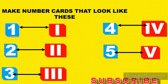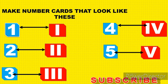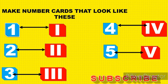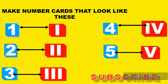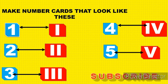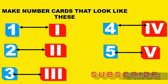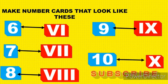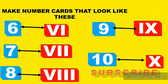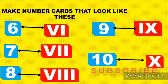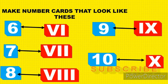Look at the number chart. We have said: 1 is represented by I, 2 by II, 3 by III, 4 by IV, and 5 by V. You have come to the end of our lesson. Thank you.